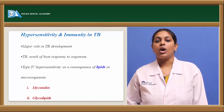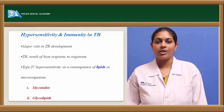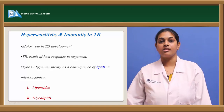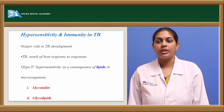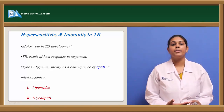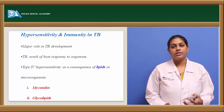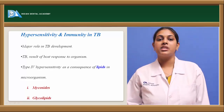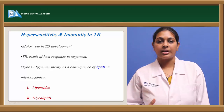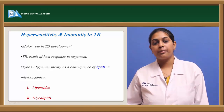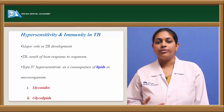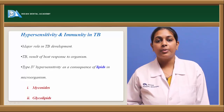Delayed hypersensitivity works largely because of lipids present in the cell wall of the bacterium — specifically mycosides and glycolipids. These lipids help in activating T lymphocytes, which are the cells involved in fighting against foreign antigens such as Mycobacterium tuberculosis. Once the bacilli enter, these lipids initiate the activation of T lymphocytes, which release cytokines and start fighting.